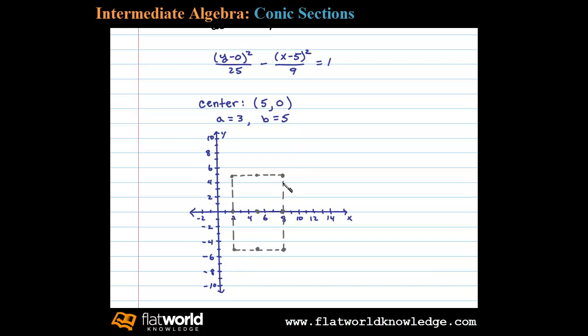Once we draw in the asymptotes, we're ready to sketch the hyperbola. Remember, this hyperbola opens upward and downward, so the vertices are going to be at (5,5) and (5,-5). Let's go ahead and sketch this, making sure to draw it asymptotic to these asymptotes. There we have it, a rough sketch of the given hyperbola.